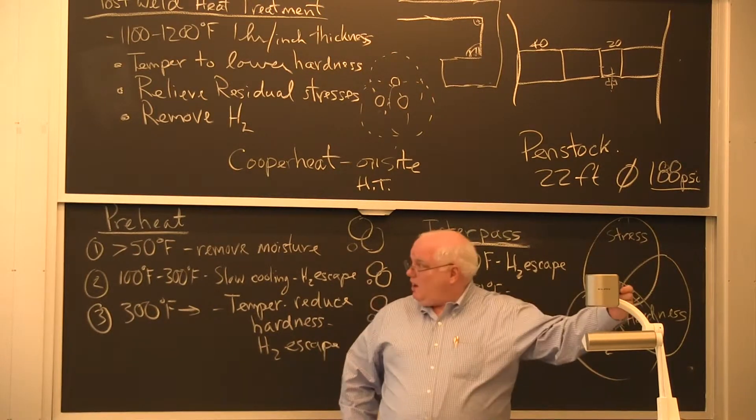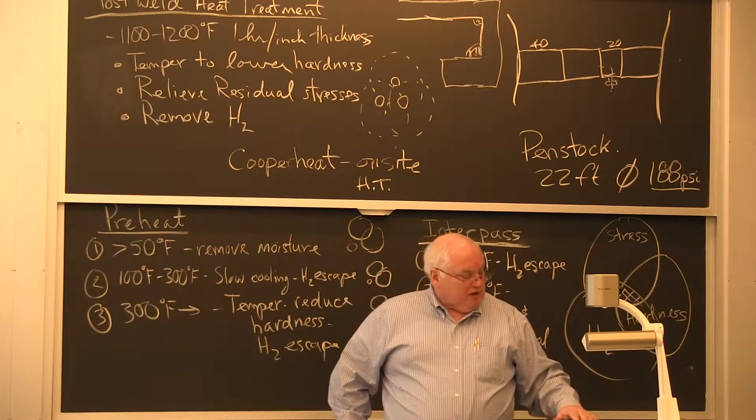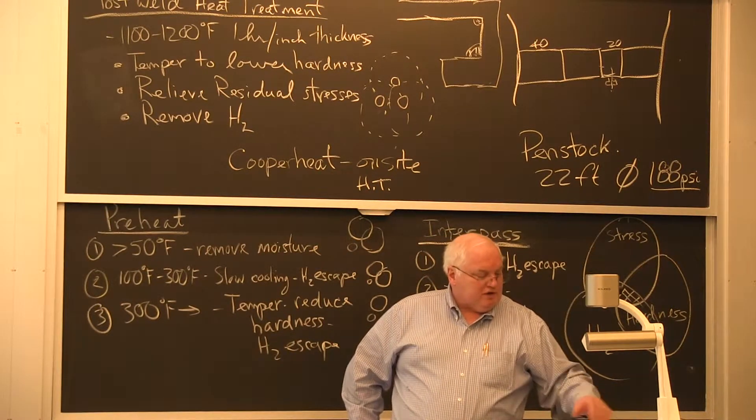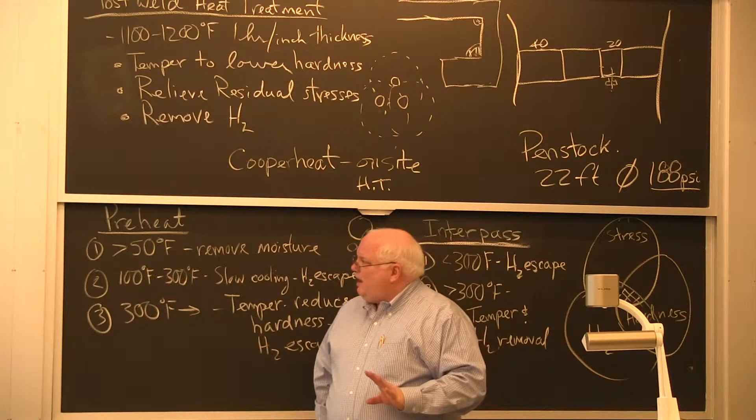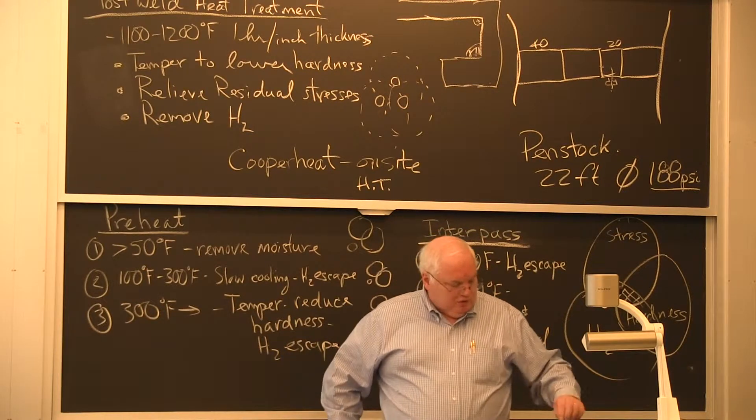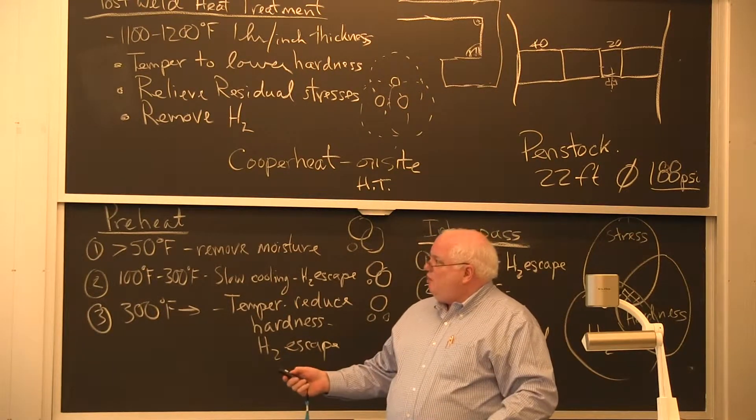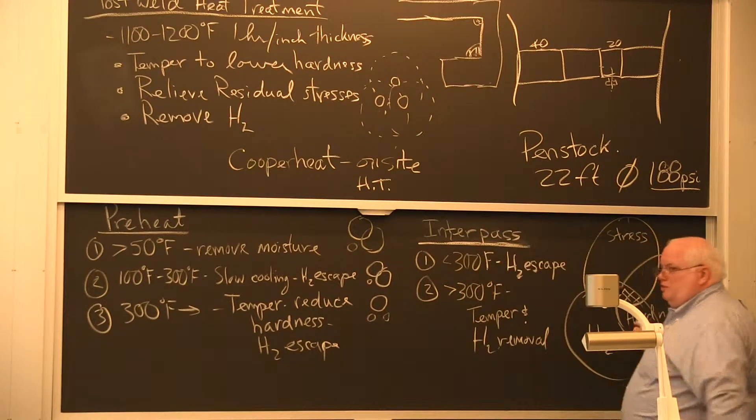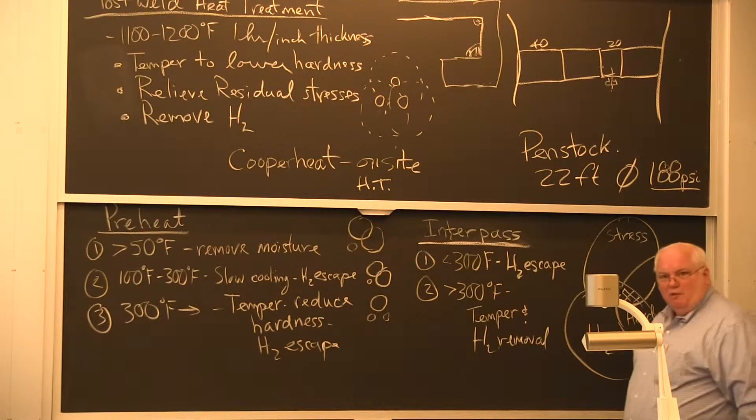So you've already got a copy of this, but it says there are two methods to determine preheat of the steel. It gets a little complex but I think it will bring together a lot of the things we've been talking about. You can either do heat affected zone hardness control or hydrogen control. Well lo and behold, those are the two bottom circles on my Venn diagram, right?